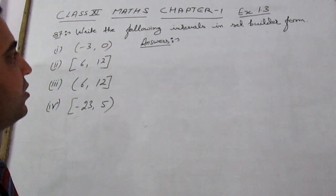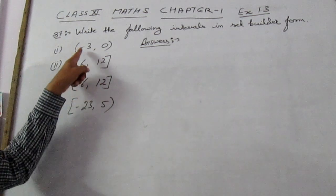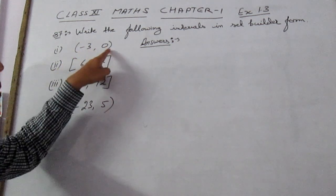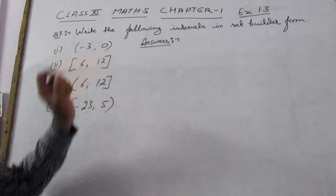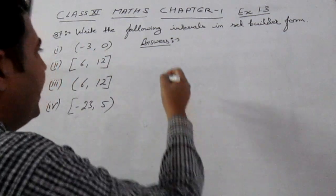As we can see, these intervals are given to us and we have to write down these in set builder form. First one is (-3, 0). But clearly we can see that on both sides small bracket is used, therefore neither -3 nor 0 is included in the interval.